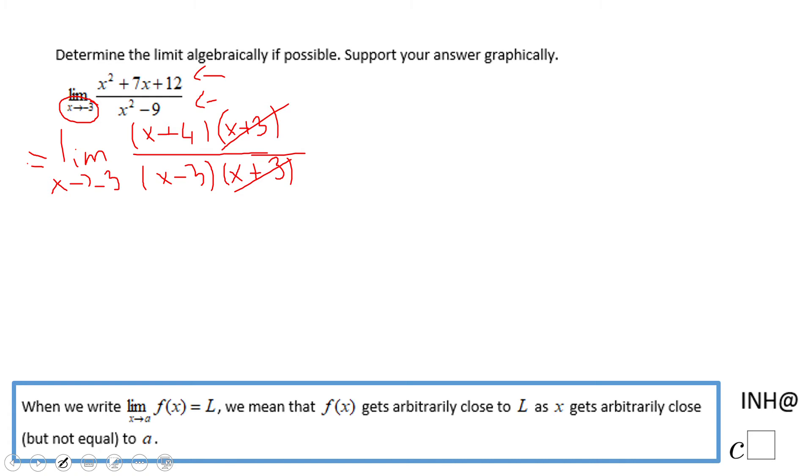And let's see what is left now. Limit when x approaches negative 3. And the only thing left is x plus 4 over x minus 3, which is the simplest form of the original expression.